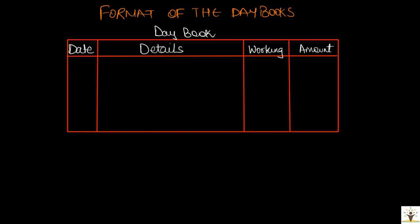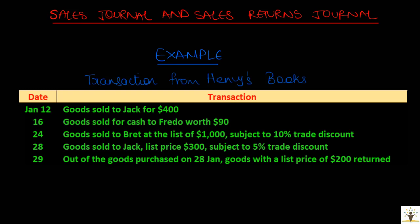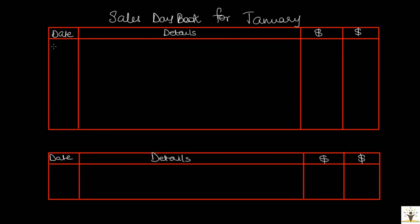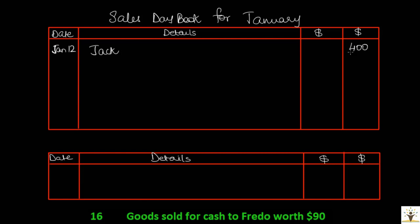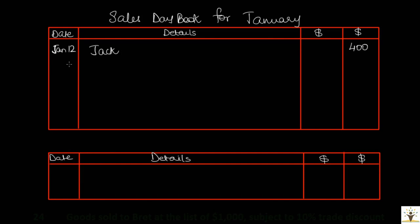Let us try recording some transactions in the sales journal and sales returns journal — transactions in the books of Henry. The first transaction: on Jan 12, goods were sold to Jack for $400. In the sales day book, date column Jan 12, details column Jack, and since there is no discount, record $400 directly in the final column. On Jan 16, goods were sold to Fredo for $90 and received cash — this is a cash transaction. The sales day book records only credit sales, so cash sales will not be recorded here.